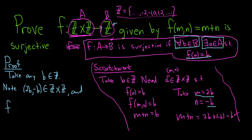Now we just have to verify that it actually works. And f of 2b negative b is equal to, well it's m plus n, so it's 2b plus negative b, which is just equal to b. So we did it, that's the proof.